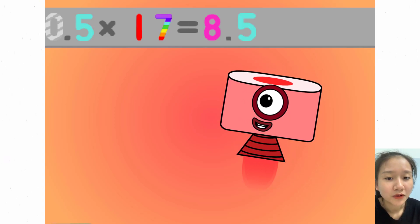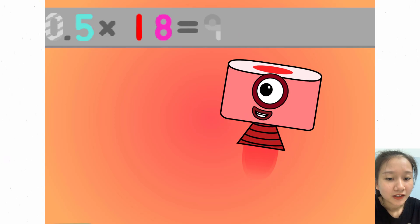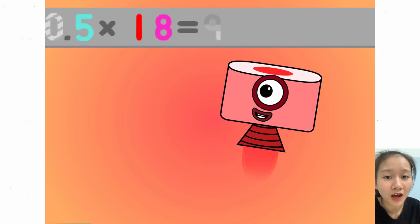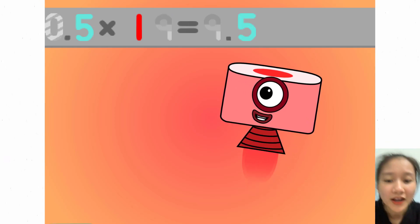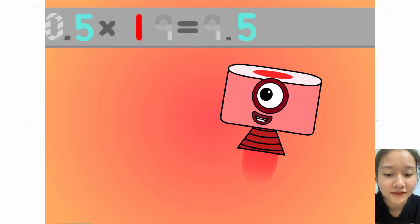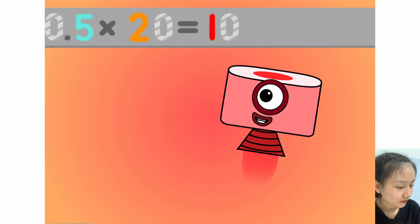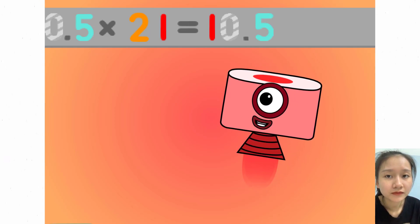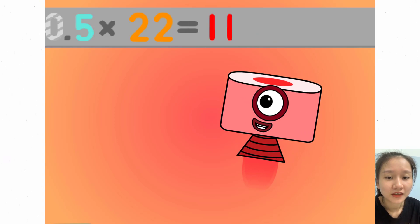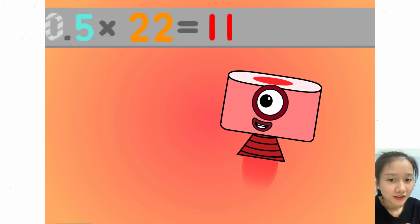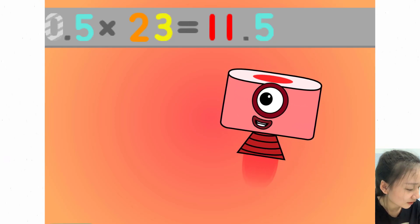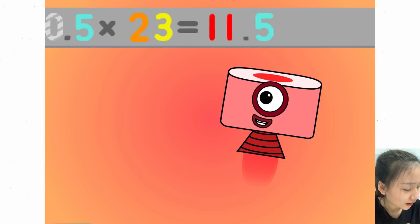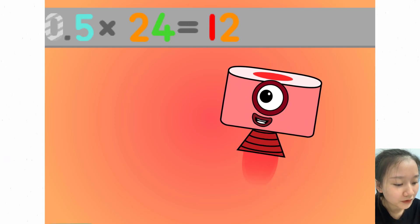0.5 times 17 equals 8.5. 0.5 times 18 equals 9. 0.5 times 19 equals 9.5. 0.5 times 20 equals 10. 0.5 times 21 equals 10.5. 0.5 times 22 equals 11. 0.5 times 23 equals 11.5.